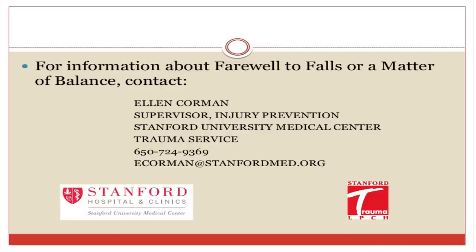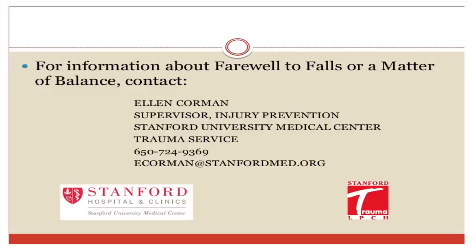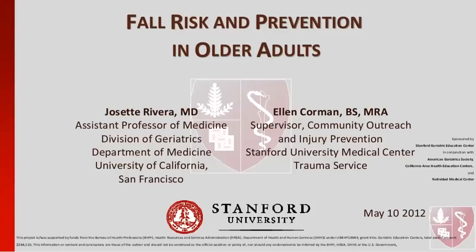A question asks: if a dementia client has a caregiver who can follow through with program recommendations, can we accept them? At Stanford we have the flexibility to consider accepting people with mild dementia if they have an extremely active caregiver. As a person gets further into the dementia process, behaviors make it more difficult, so we take it on an individual basis.